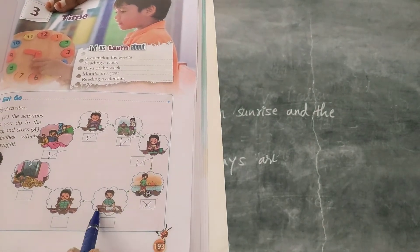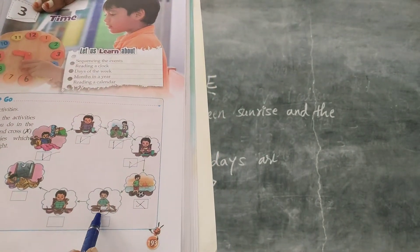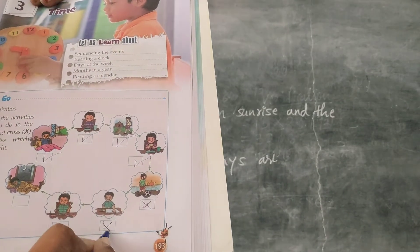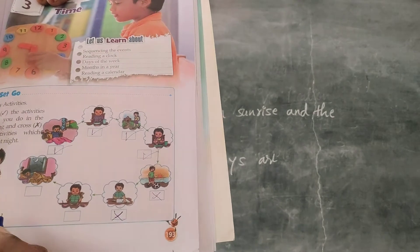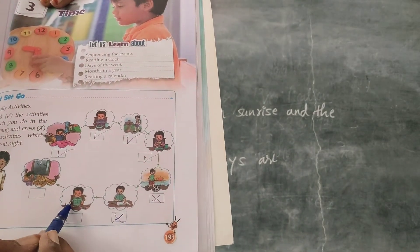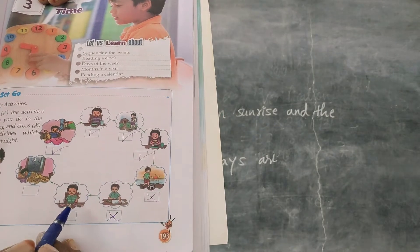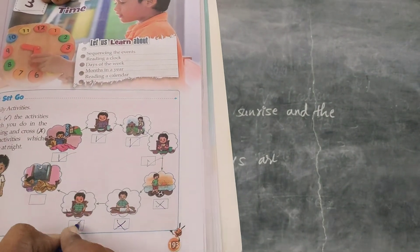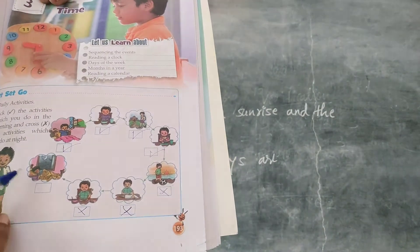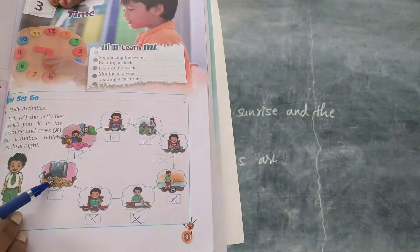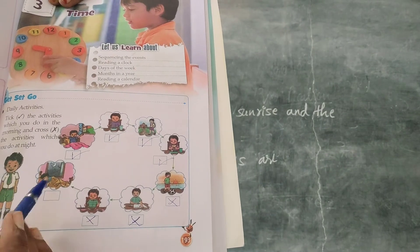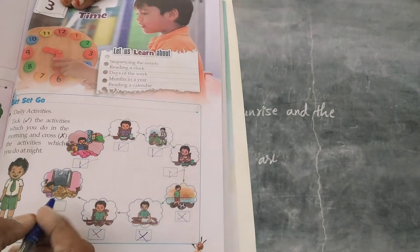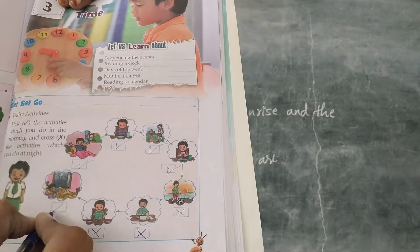After the evening, this boy is reading — almost we are reading at night time, so put a cross mark here. This boy is having his dinner — dinner we are having at night time, so put a cross mark here. And lastly, this boy is going to his bed — this activity also we are doing at night, so put a cross mark here.